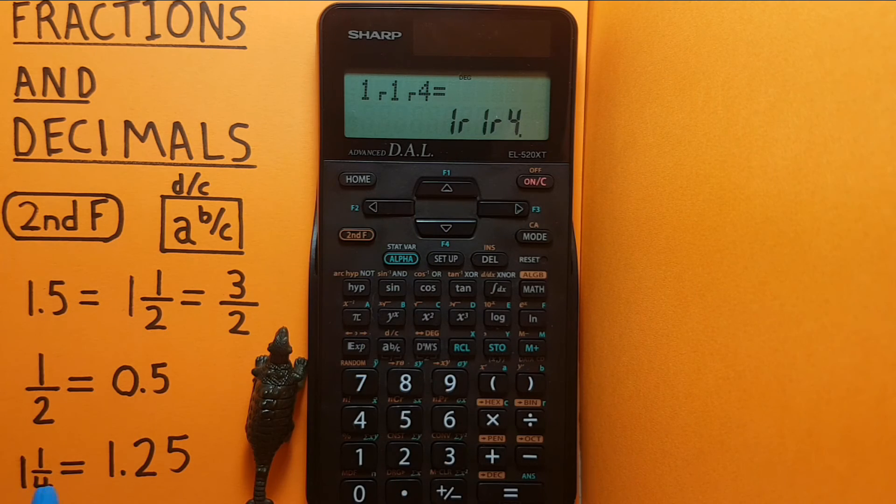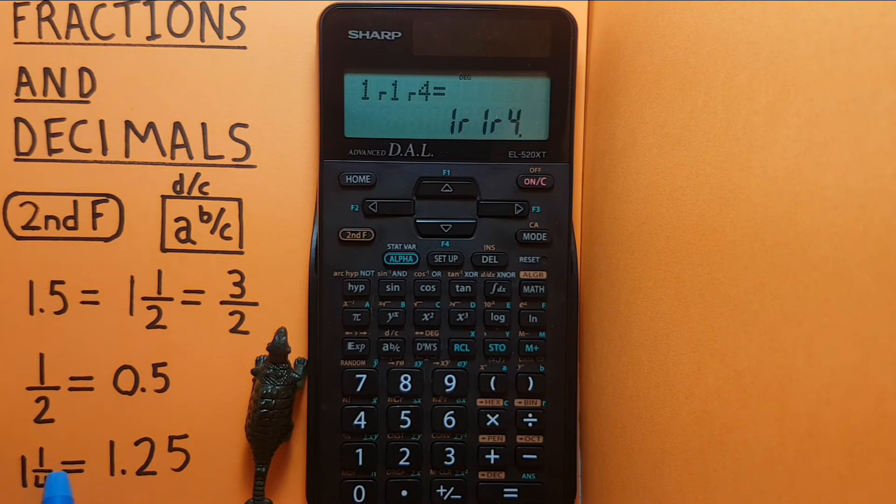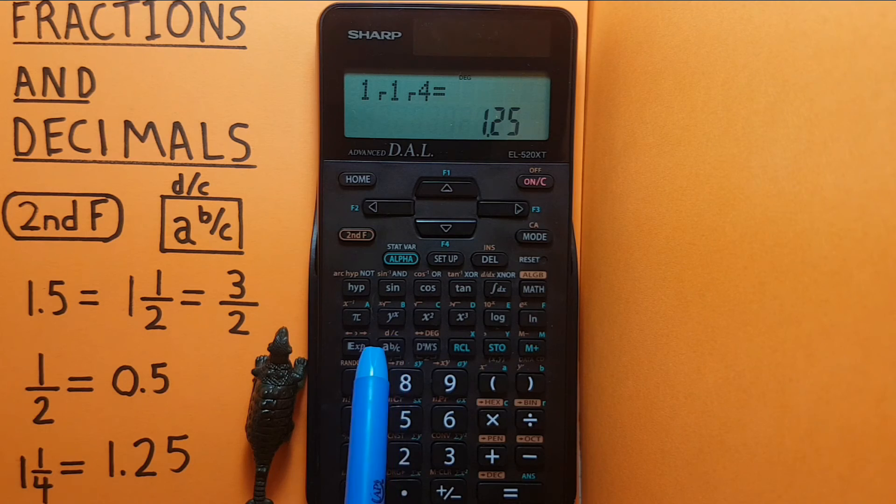So this is saying the same thing as this, and then again a b over c gives us 1.25.